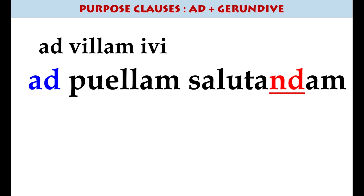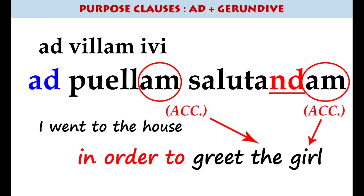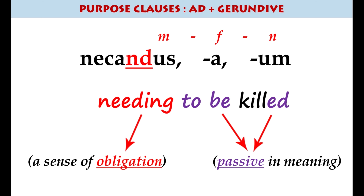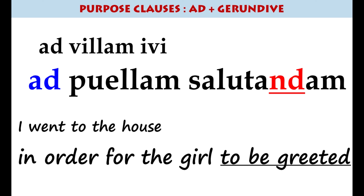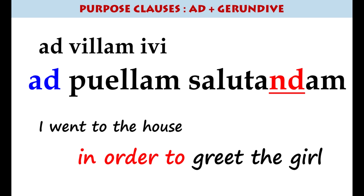'I went to the house in order to greet the girl' — 'ad puellam salutandam'. As mentioned at the beginning, the gerundive has both a passive sense and a sense of obligation. When you have these kinds of sentences, don't translate the passive — just make it active. But don't forget the sense of obligation: it is a kind of purpose clause meaning 'in order to do something'.